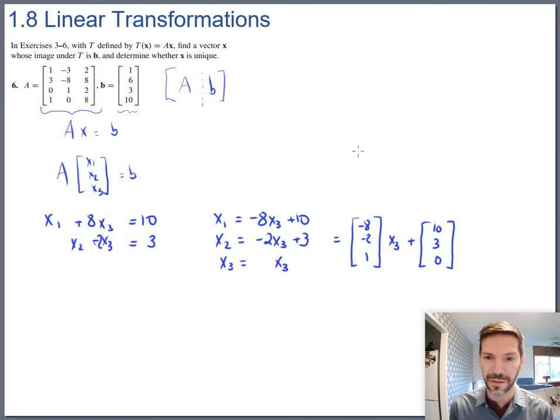Out of those infinitely many let's just get one specific answer since they wanted a vector x. So I think the easiest one probably is just to say if x3 is zero. Then the solution would be just 10, 3, 0. So if I multiply that by this it would say take 10 of the first column, 3 of the second column, and 0 of the third column. That should produce 1, 6, 3, 10.